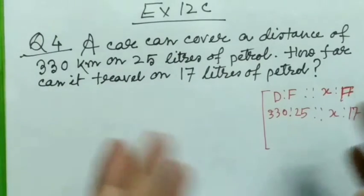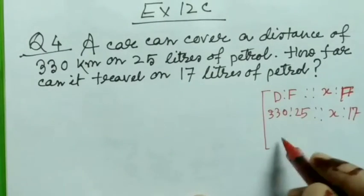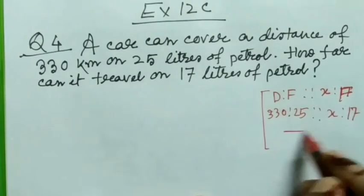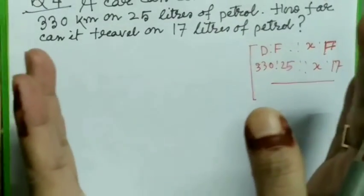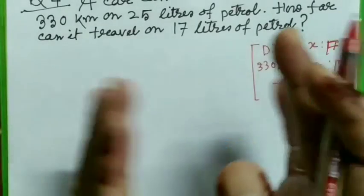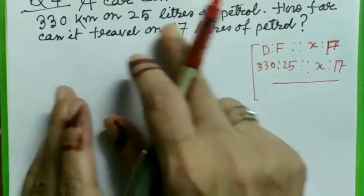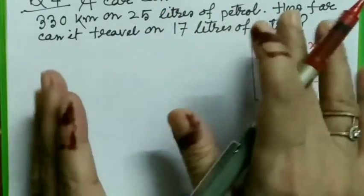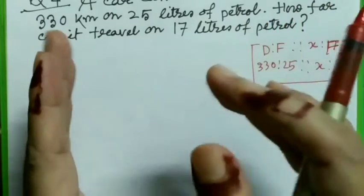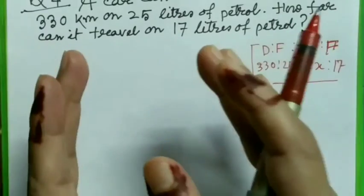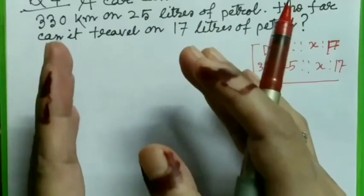You can try it yourself using proportion. I have just written that to show you, and in both cases the answers will be the same. Now, by knowing the distance covered by 25 liters, we can't find directly the distance covered by 17 liters. First of all, we have to find out the distance covered by 1 liter, then we can easily get the distance covered by 17 liters of petrol.